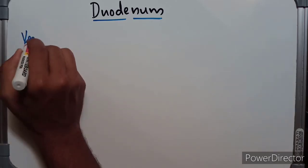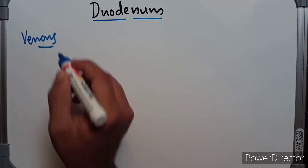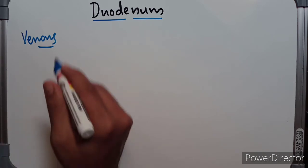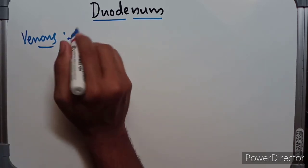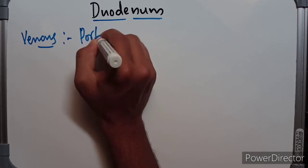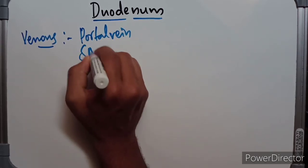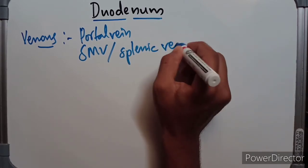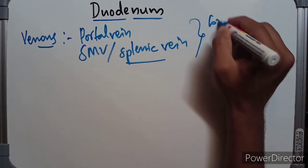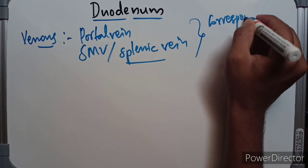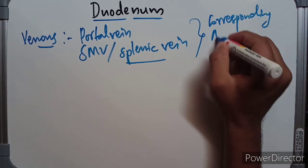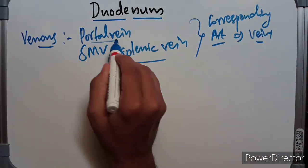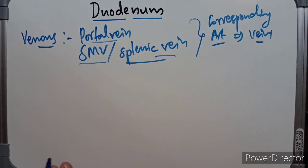Coming to the venous drainage of the duodenum: the veins correspond to the arteries supplying the duodenum. They drain into the splenic vein, the superior mesenteric vein, and the portal vein. All corresponding veins drain ultimately into the portal vein, superior mesenteric vein, and the splenic vein.